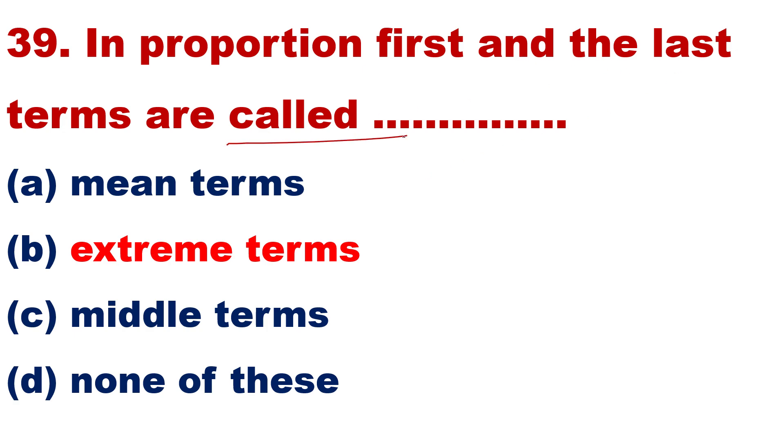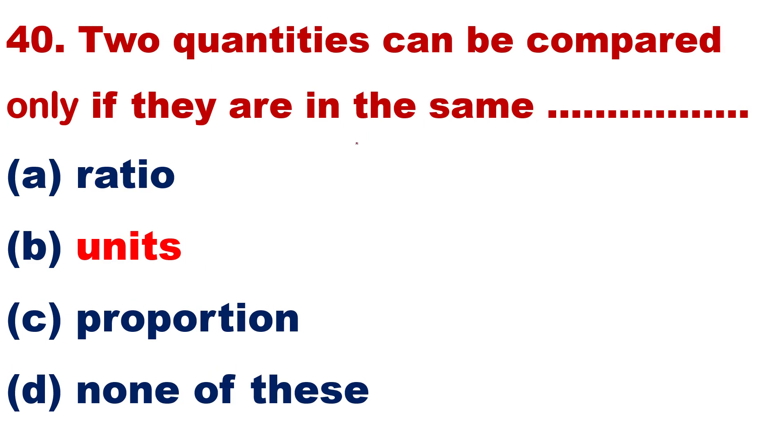Question number 39: In proportion, first and the last term are called. Maybe extreme term, middle term, none of these, or mean term. Last, maybe last. 40: Two quantities can be compared only if they are in the same. Ratio, units, proportion, none of these.